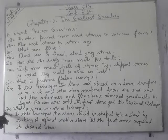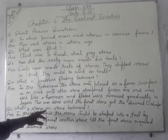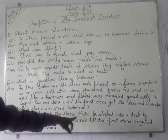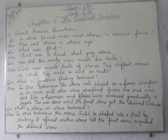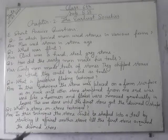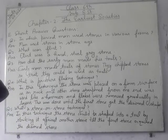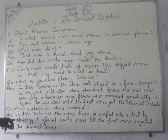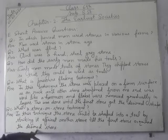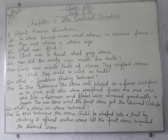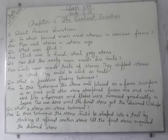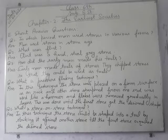Question number five: what is the stone on stone technique? In this technique, the stone could be shaped into a tool by striking it against another stone until the first stone acquired the desired shape. So in this way your exercise is completed; parts E and F remain for the next video.